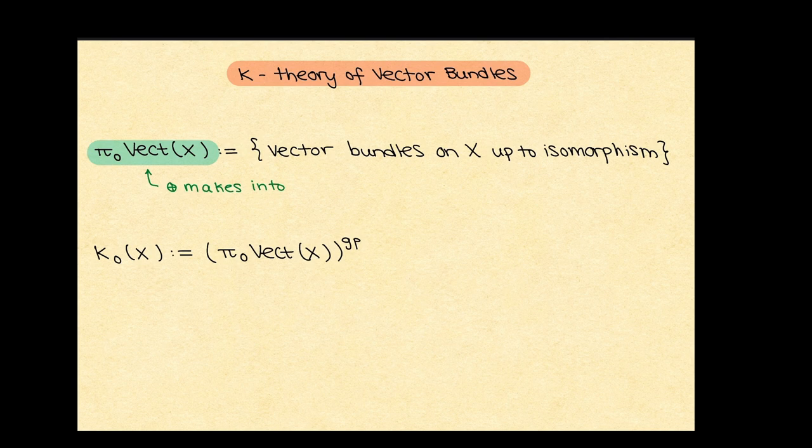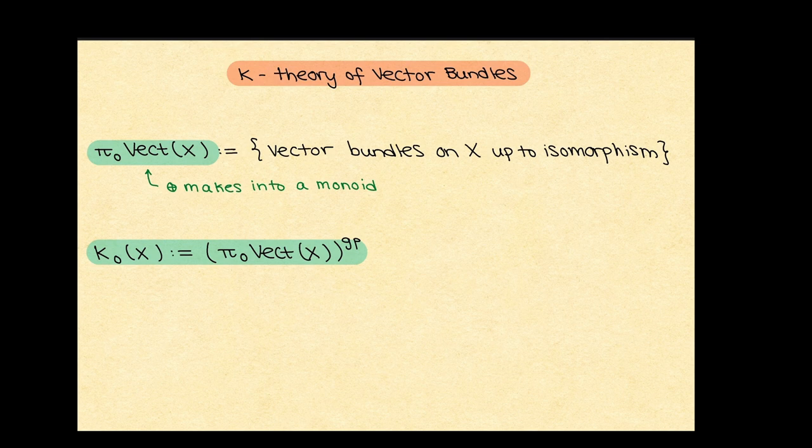So now since we have a monoid, we have this technology of group completion. And we can define K₀Vect(X) by taking this monoid of vector bundles on X up to isomorphism and group completing it. And so now this is an interesting group associated to X.